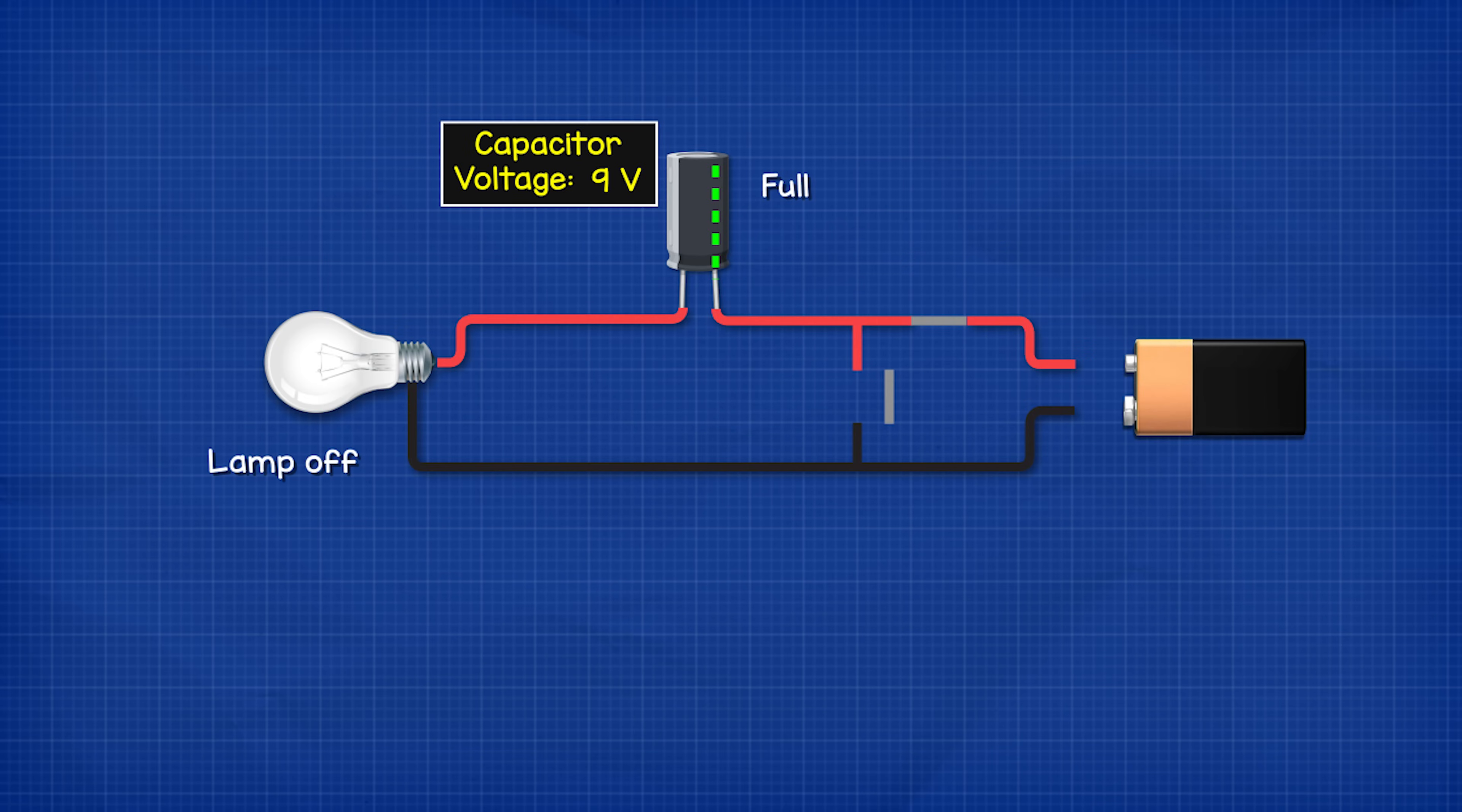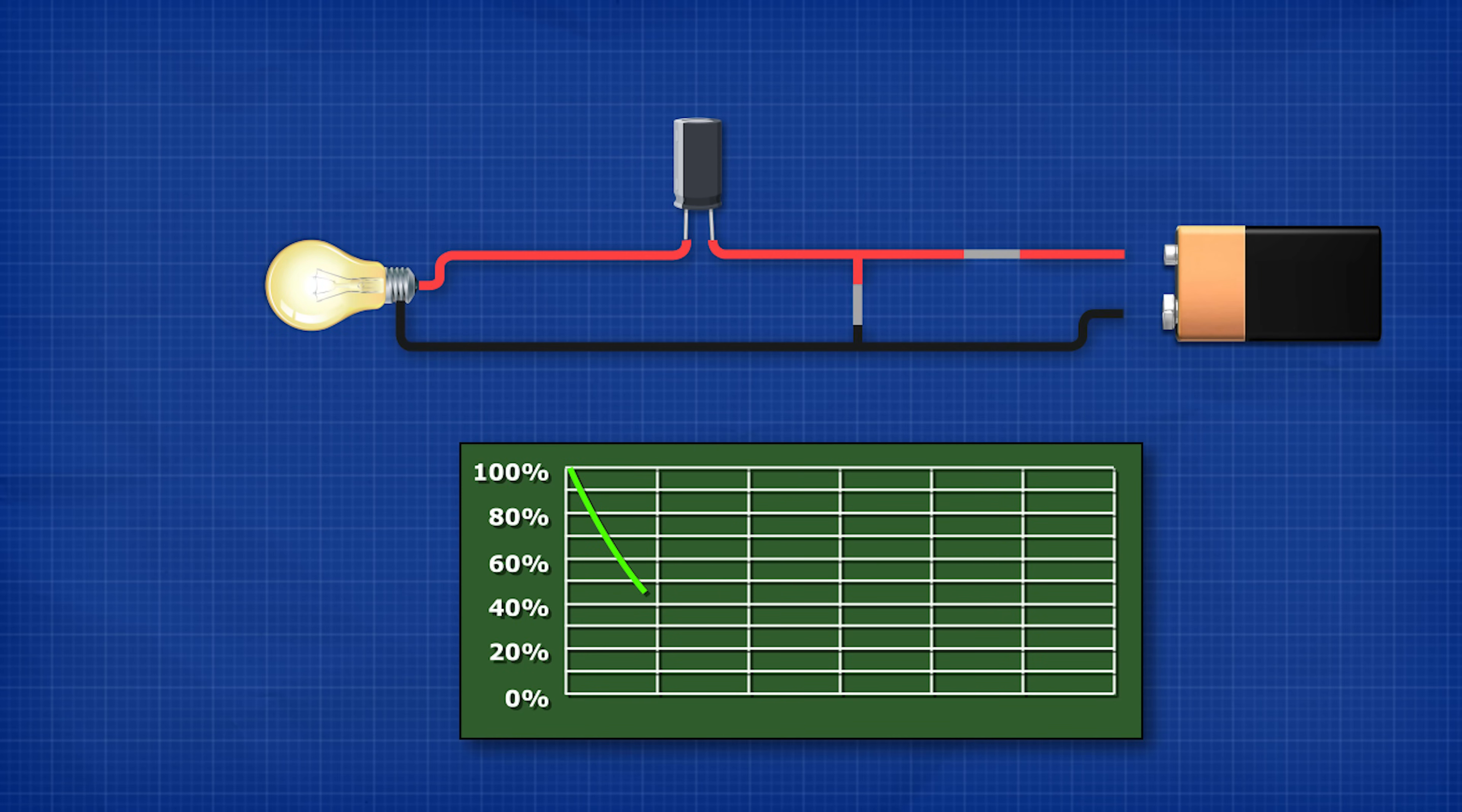When we provide a path for the capacitor to discharge the electrons will leave the capacitor and the voltage of the capacitor reduces. It doesn't discharge instantly but follows an exponential curve.